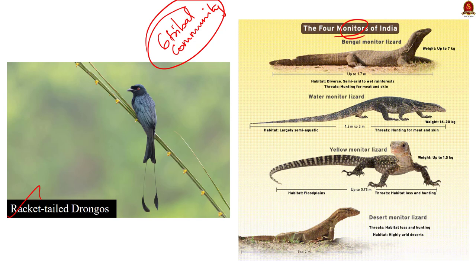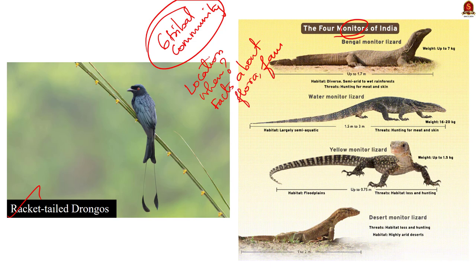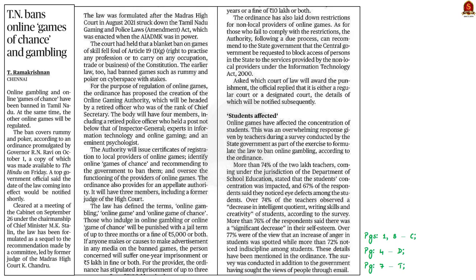In this news article discussion, we saw about the location of the Periyar Tiger Reserve, when it was declared a sanctuary and when it was declared a Tiger Reserve. We saw facts about the flora and fauna in the region, and finally we saw about the tribal communities residing in the reserve.